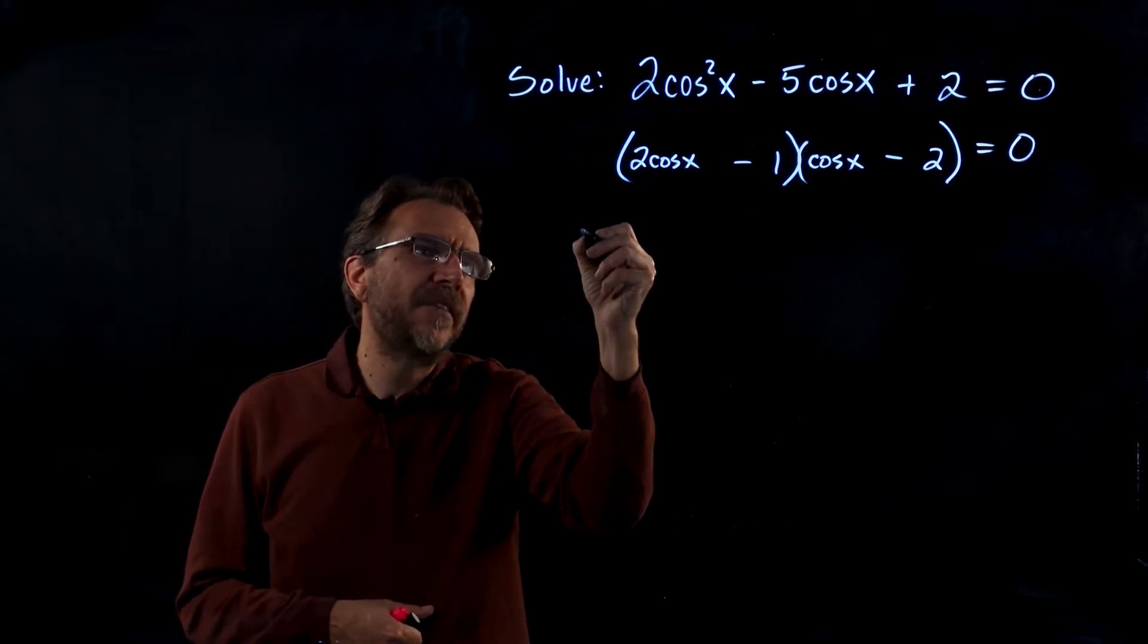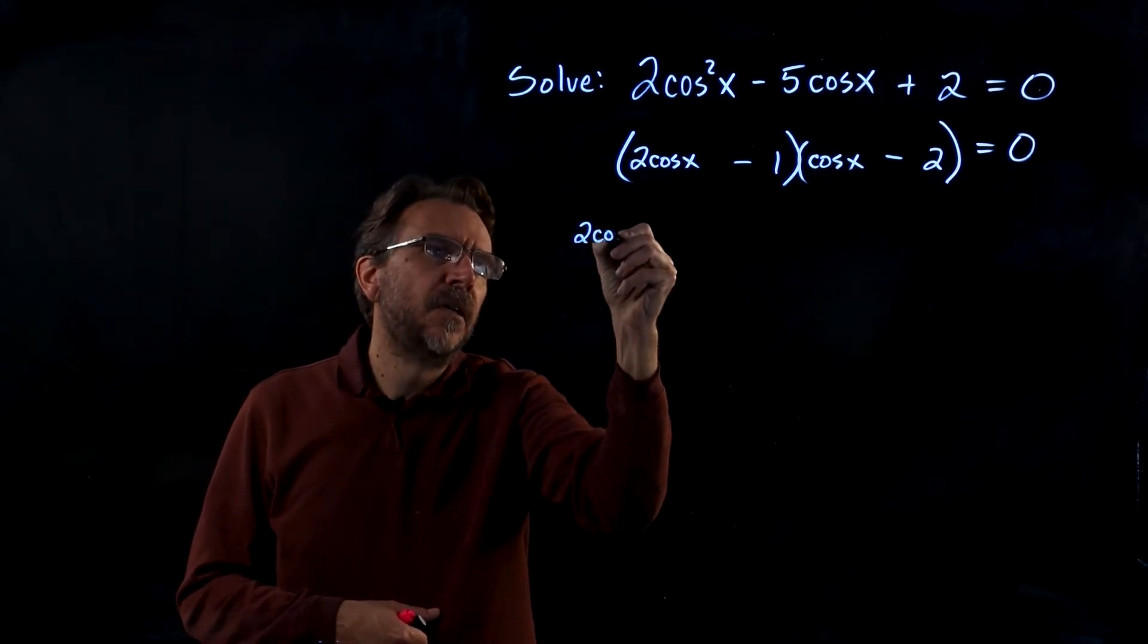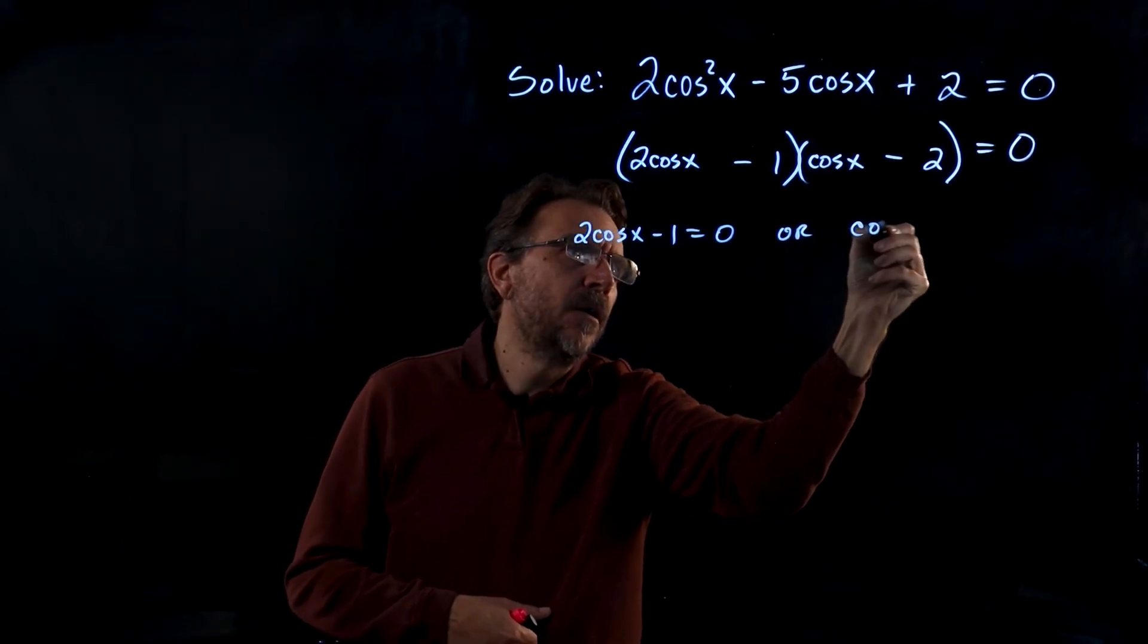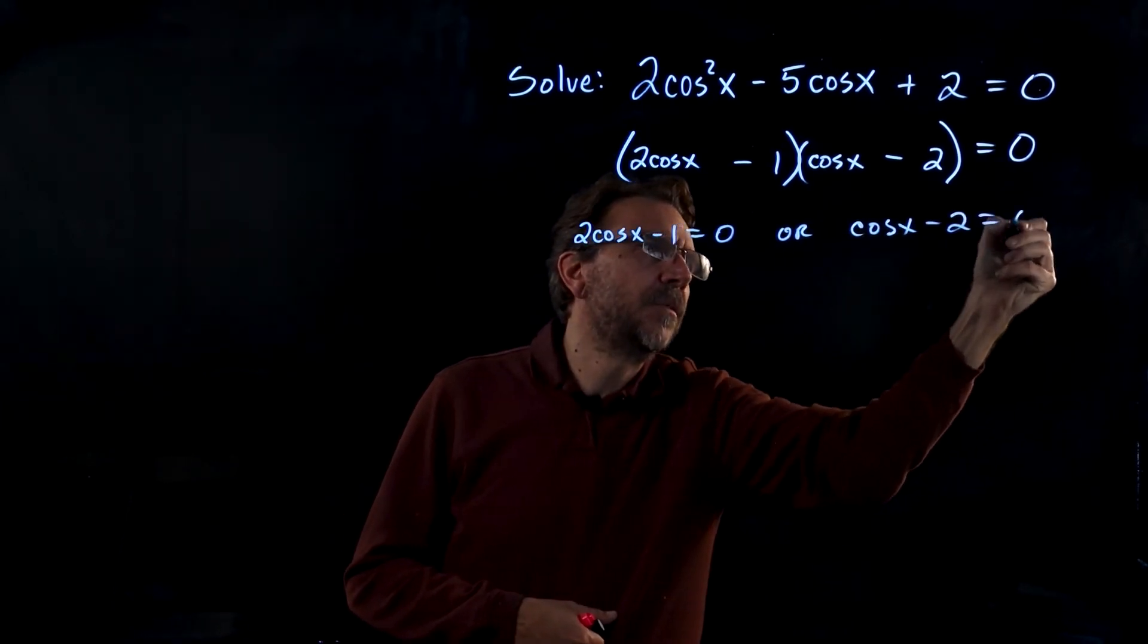Once you get it factored, you then set each factor equal to 0. So we have 2 cosine x minus 1 equals 0, or cosine x minus 2 equals 0.